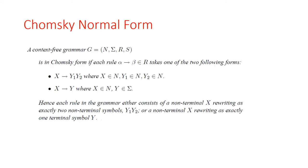A context-free grammar g — with N (non-terminals), Σ (terminals), R (rules), and start symbol S — is in Chomsky normal form if each rule α → β takes one of two forms: X → Y1 Y2, where X, Y1, Y2 are all non-terminals, or X → y, where X is a non-terminal and y is a terminal. Thus, each rule rewrites a non-terminal as exactly two non-terminals, or as exactly one terminal.